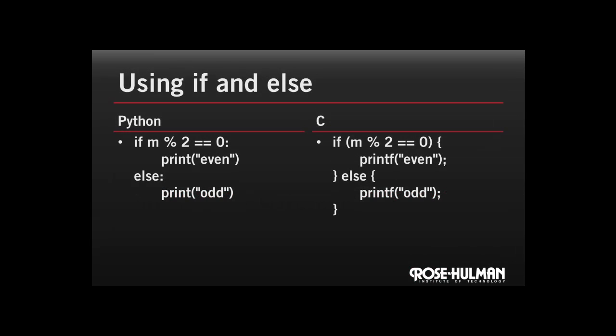The next thing we want to look at is how if and else statements work in C. On the left side of this slide, I have a Python if else statement. And on the right hand side, I have the same thing in C. Take a look at this code and see what differences you can find between the two.